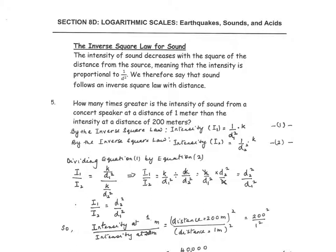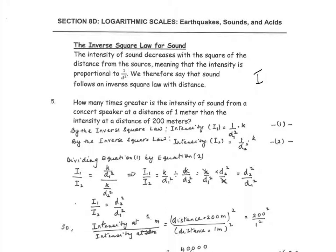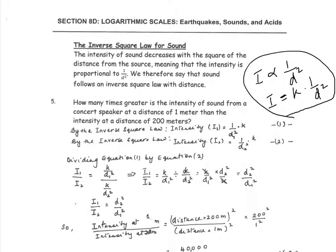There is a relationship between the intensity of the sound and the distance at which we are from the source of the sound. The rule says that the intensity of the sound, i, is inversely proportional to 1 over d squared — that is called the inverse square law for sound. Converted to an equation, the intensity equals k times 1 over d squared, where k is some constant. This is called the inverse square law of sound.